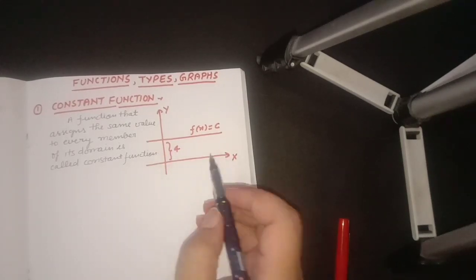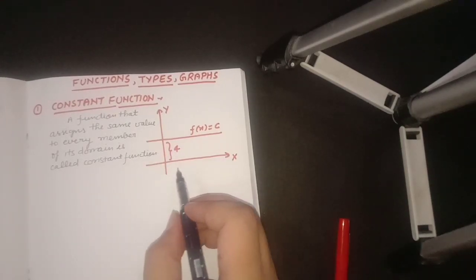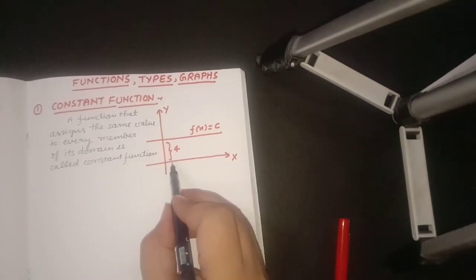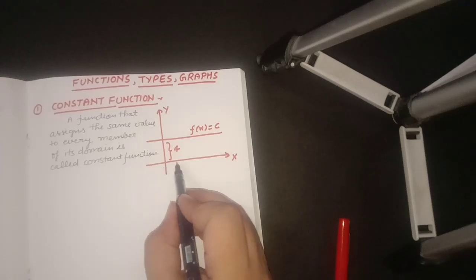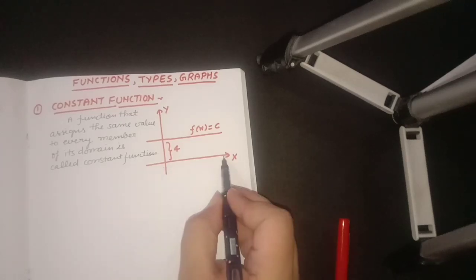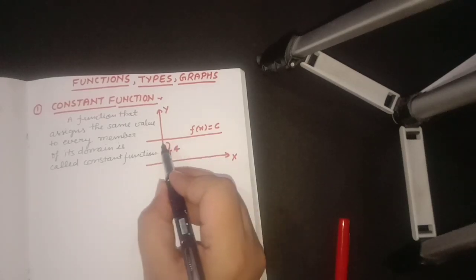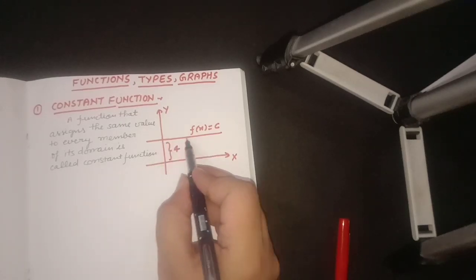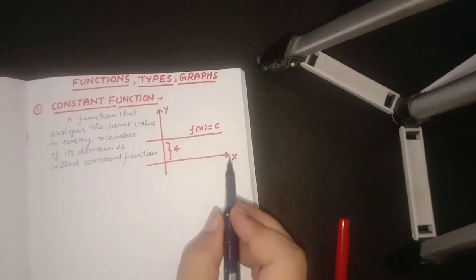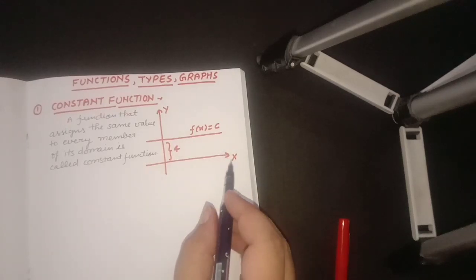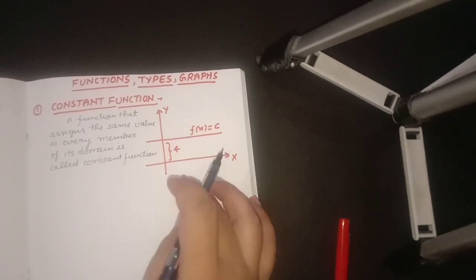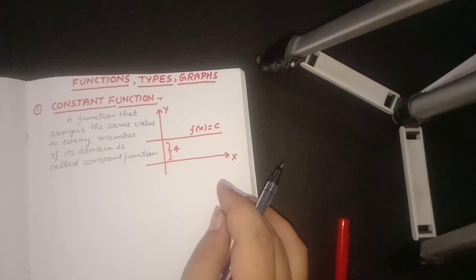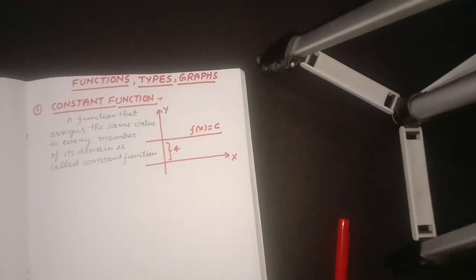Domain means the values of x. As the values of x are changing, the value of y is not changing — it is constant. Such functions are known as the constant function. This is a simple graph of a constant function.